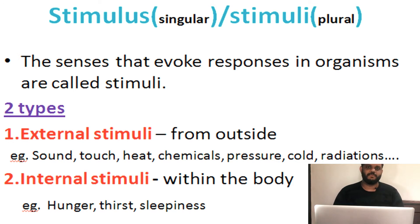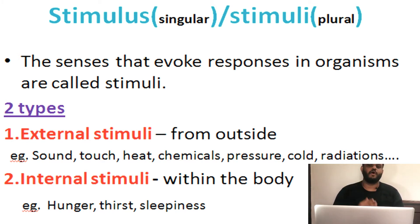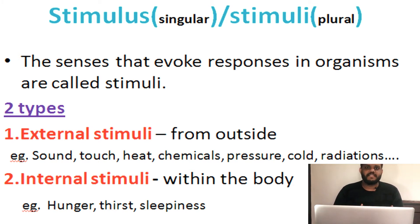One is the external stimulus and another one is the internal stimulus. What is the difference between external and internal stimulus? As the name indicates, external stimulus comes from the outside of the body. For example, sound, light, touch, pressure, pain, and taste — all these things come from the outside of the body, so they are known as the external stimulus.